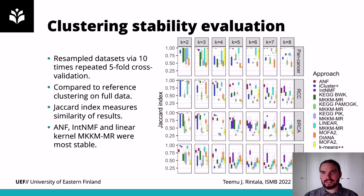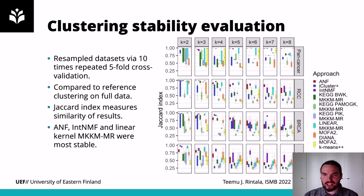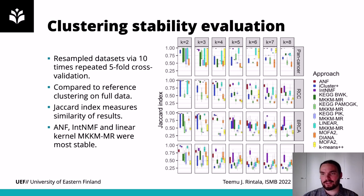Here we have the stability results, generated by resampling the dataset multiple times using cross-validation repeated several times, where the results were compared to our reference obtained from the full data. We used the Jaccard index to measure the overlap of pairs of patients belonging to the same cluster in the reference and the new result. Some methods do not obtain high stability, but ANF, integrativeNMF, and the linear kernel were the most stable.